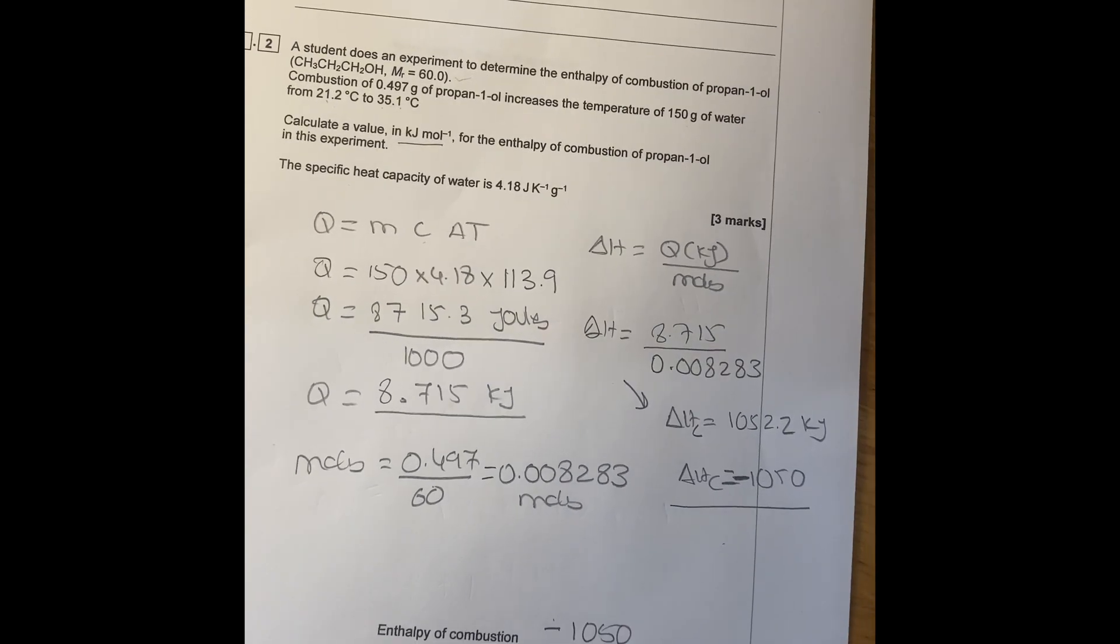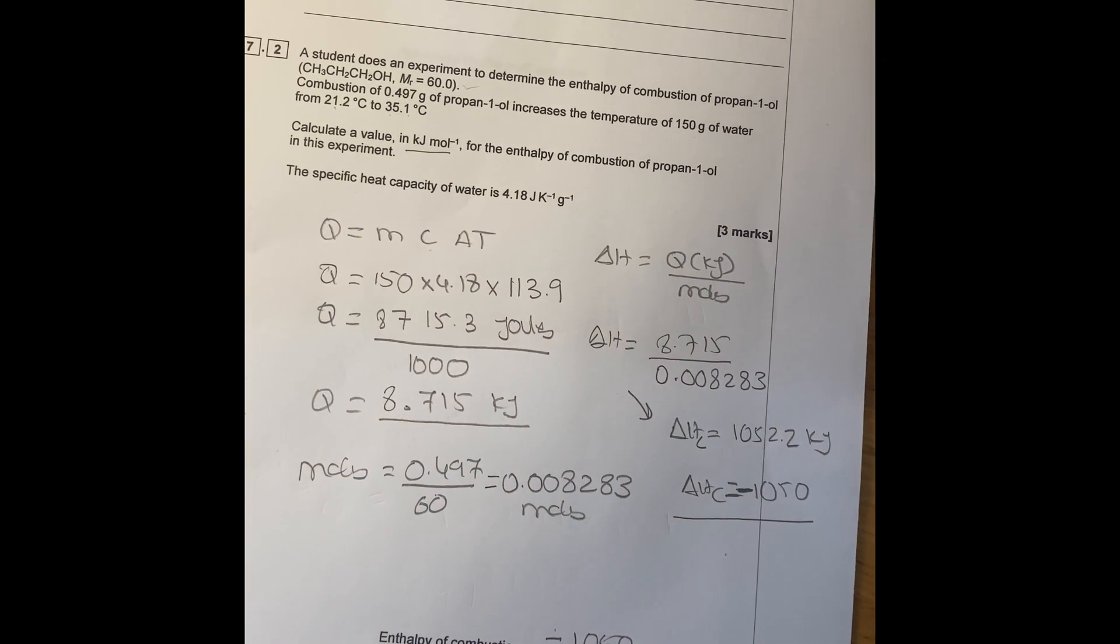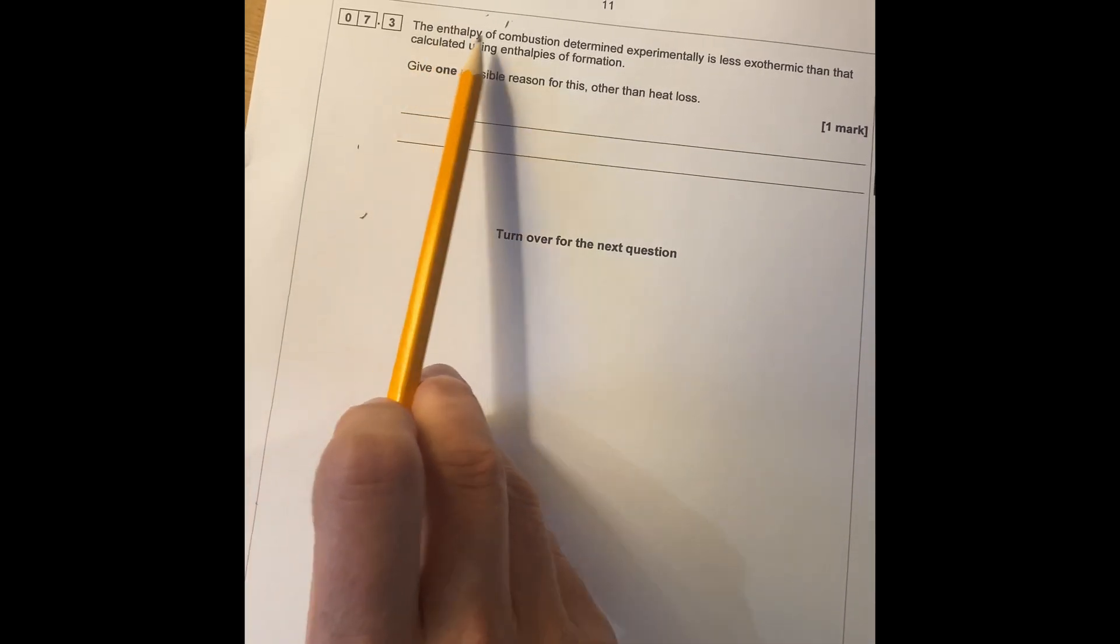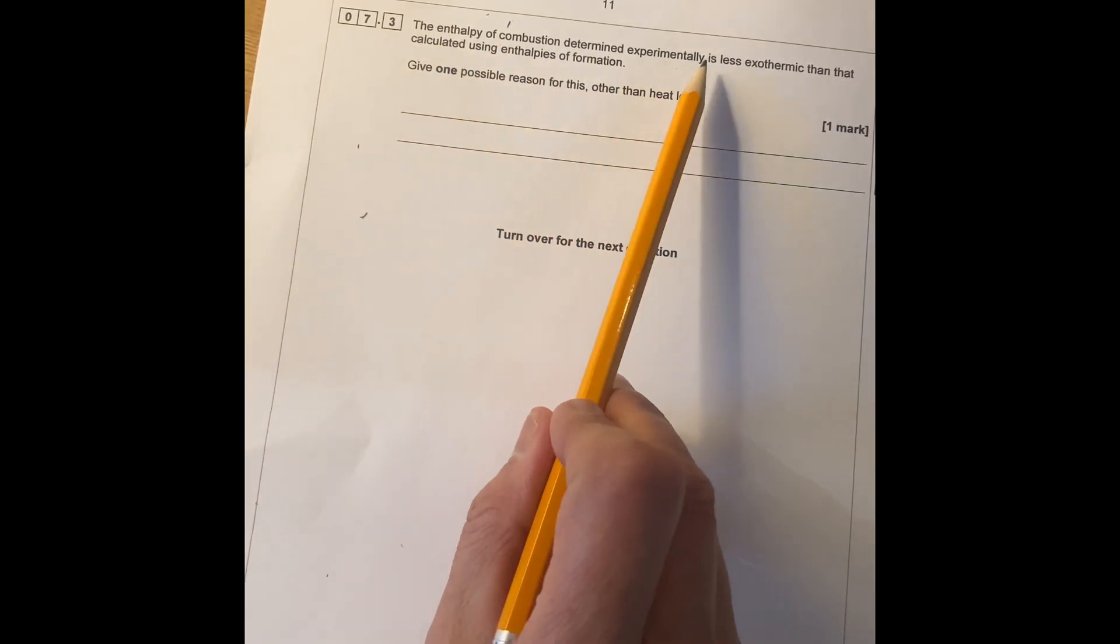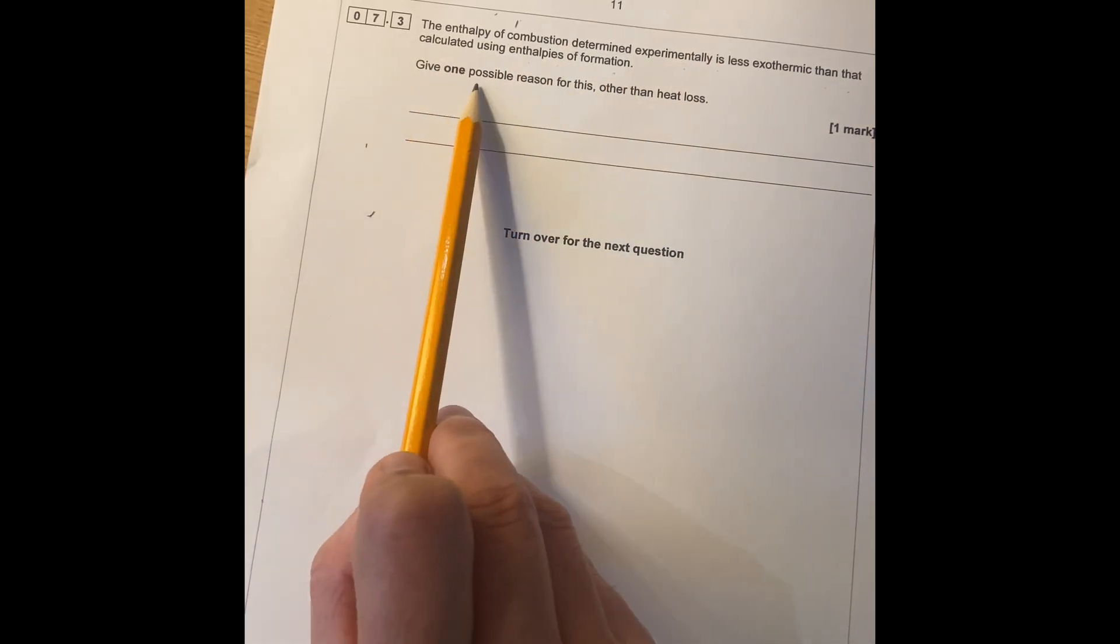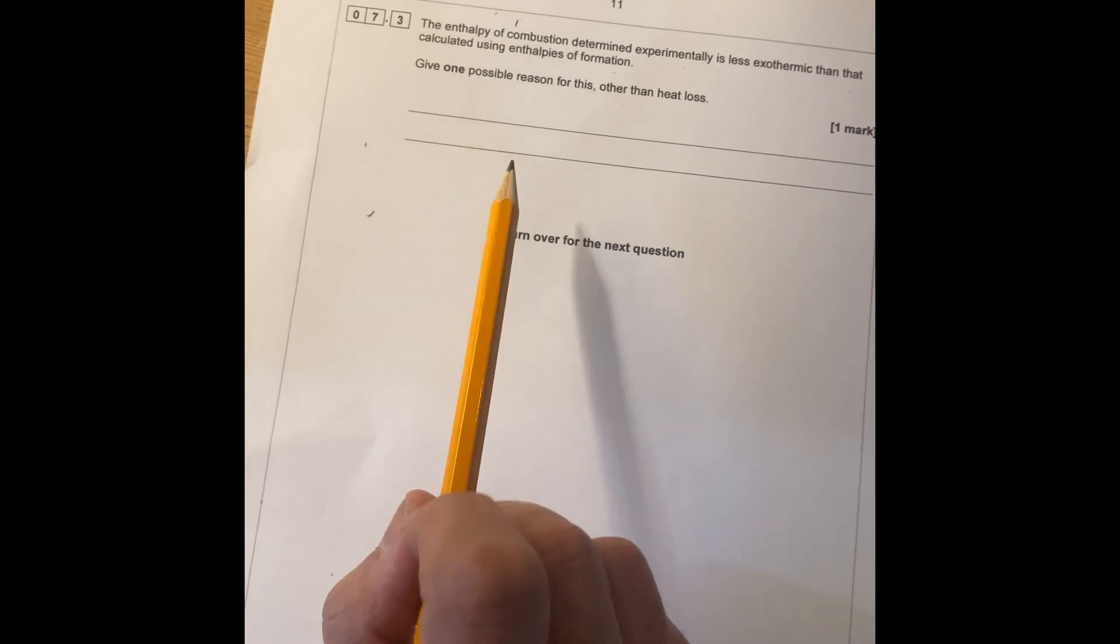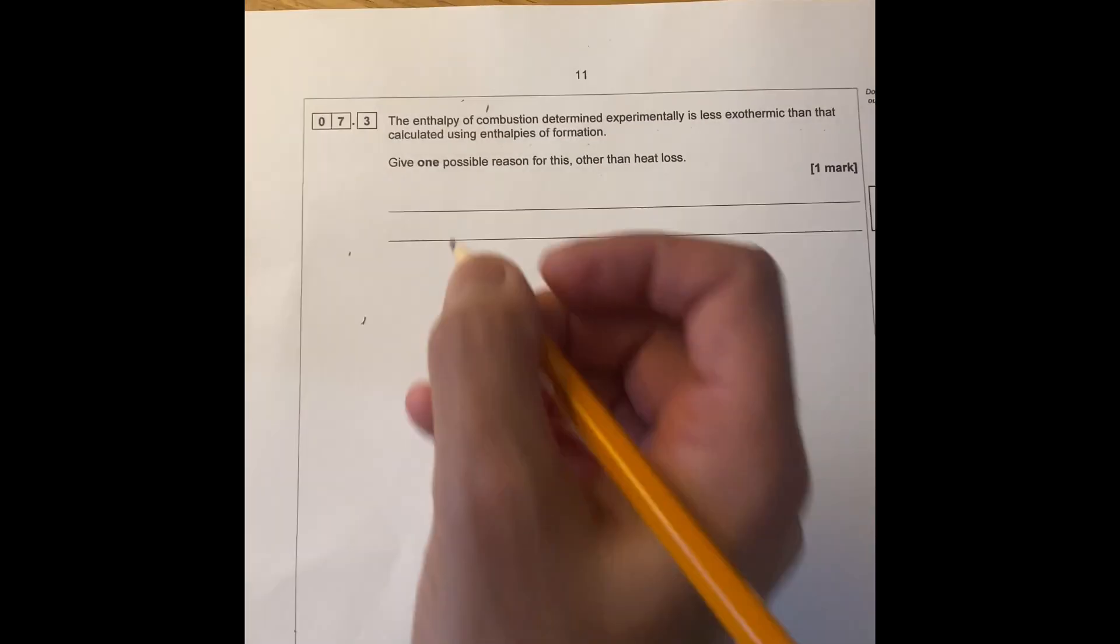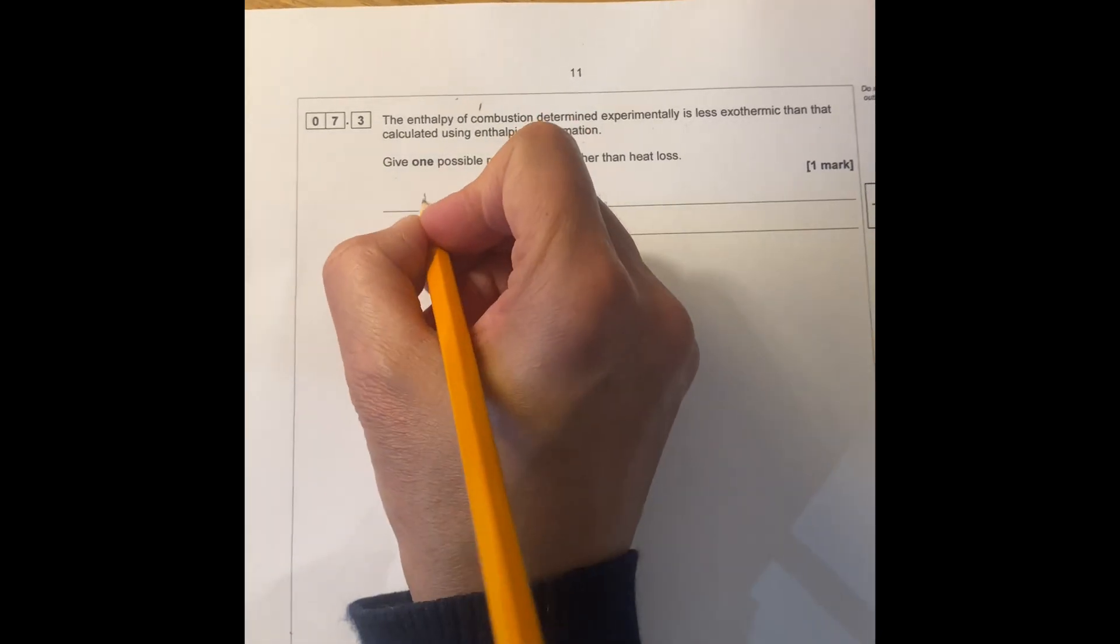I hope that's helpful. It always works like this having these type of questions. The next part of this question usually comes. It says the enthalpy of combustion determined experimentally is less exothermic than the calculated using enthalpy change of formation. Give one possible reason for this other than heat loss. So you can have incomplete combustion.